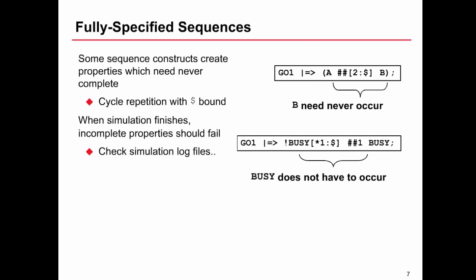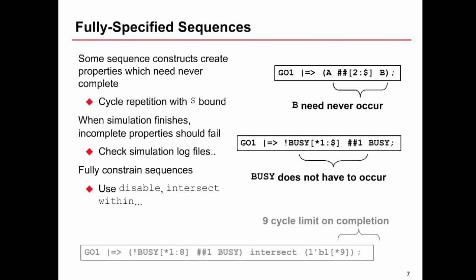So how do we get around this? Well, what we can do is we can add things which actually constrain the sequence not to be of infinite length anymore. So we can use disable if, for example, intersect within those sequence operators we discussed earlier. What we've got an example of now is go one. What we're doing is we're intersecting that with nine consecutive occurrences of one tick b one. So basically this part of this sub sequence here, which says not busy repeated one to eight times followed one cycle later by busy must complete within nine cycles.